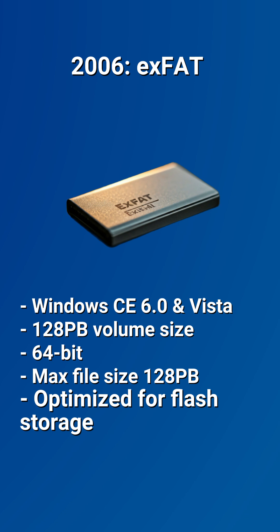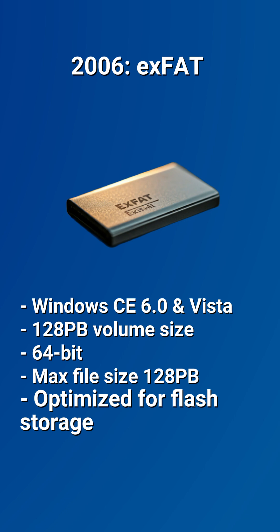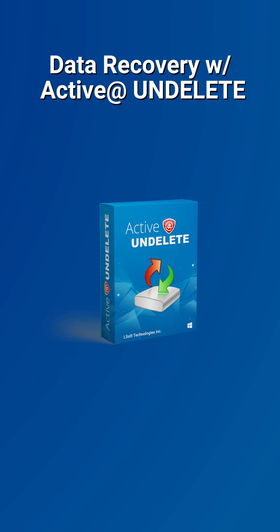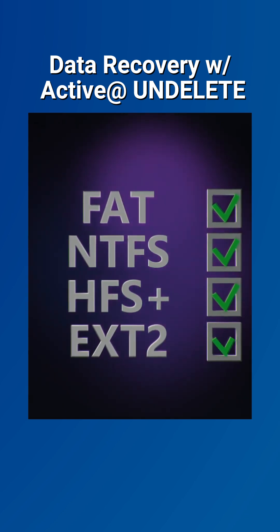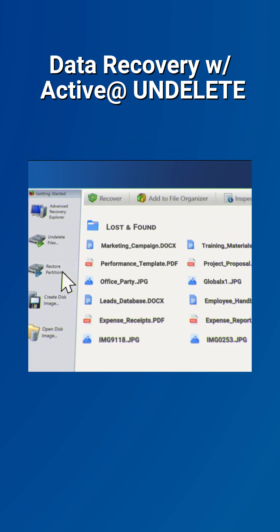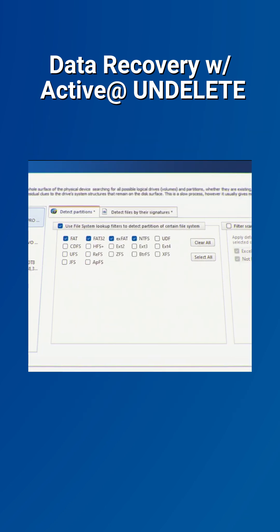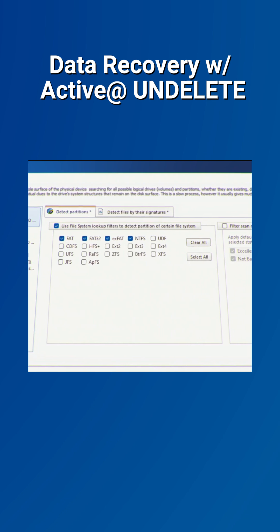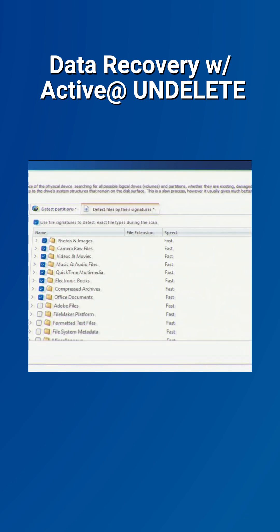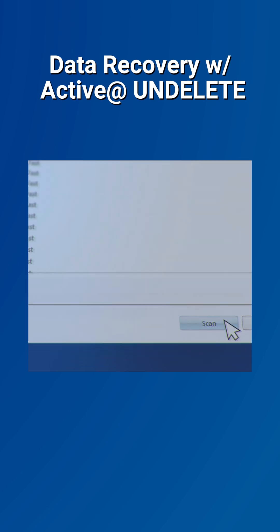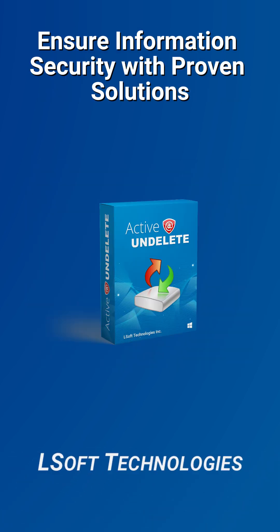Despite advancements, data loss remains a universal challenge. This is where Active Undelete comes into play, offering comprehensive recovery options for files across FAT and many other file system formats. Using its file signatures feature scans and restores lost data effortlessly, providing a safety net against accidental deletion or formatting. To safeguard and recover your data on any file system, check out Active Undelete.